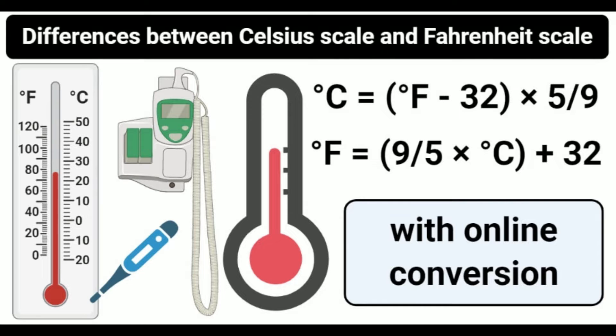Celsius scale, or centigrade scale, is a temperature scale that is based on the freezing point of water at 0°C and the boiling point of water at 100°C. The scale was introduced by and also named after the Swedish astronomer Anders Celsius in 1742. This scale uses the symbol °C.